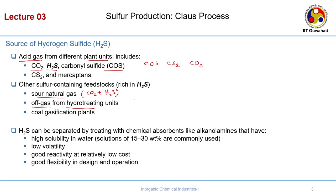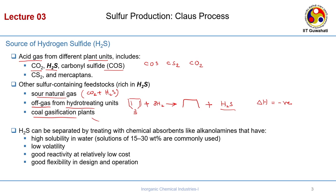If you do a hydrogenation of thiophene, you get a linear chain compound plus H2S. Hydrotreating means to remove the heteroatom — in this case sulphur is your heteroatom. The reaction is exothermic (delta H is negative). In a catalytic manner, we produce a linear chained alkane and H2S. H2S can also come from coal gasification plants, where coal rich in sulphur may generate H2S gas. All these are potential sources for elemental sulphur.